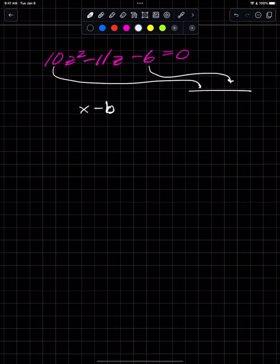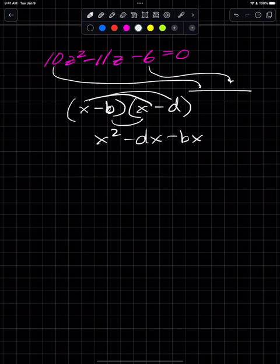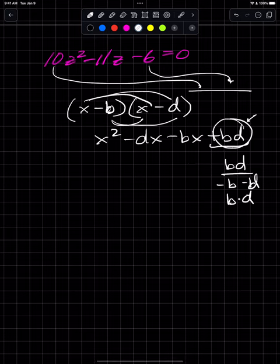I would take x times x to get x squared, x times d to get negative dx, negative bx, and positive bd. When I found the factors of this number, that would be b and d. I know this looks really weird, but the bottom line is I would take this pair and split the middle term just like that.